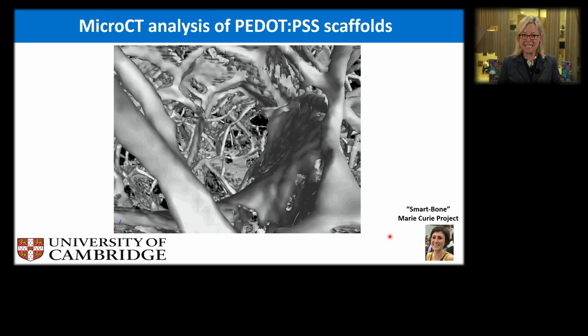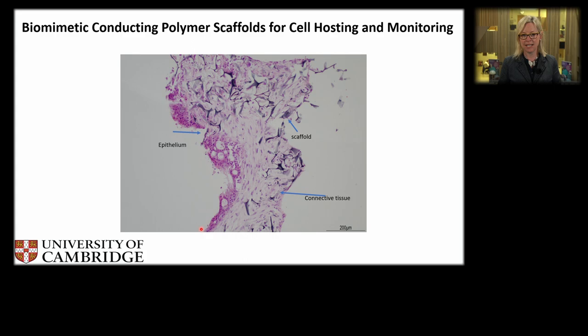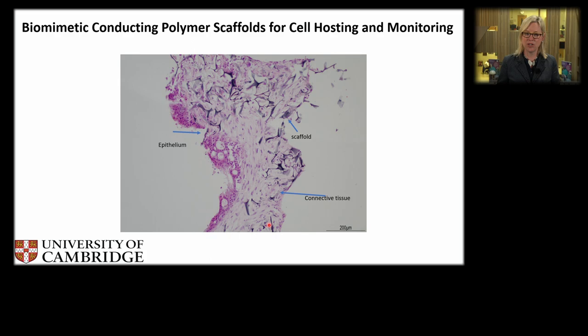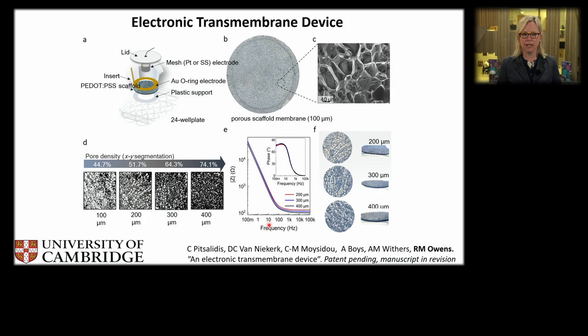Micro-CT analysis shows it's an interconnected sponge — because it's all connected, applying a potential on one side allows measurement on the other. To confirm it's a biomimetic scaffold, when we grow tissue — connective or fibroblast tissue and epithelial cells — and send a cross-section for H&E staining (how pathologists stain tissues), our scaffold just looks like part of the tissue. It doesn't seem very invasive. We're trying to mimic tissue properties as closely as possible without our technology being too invasive.